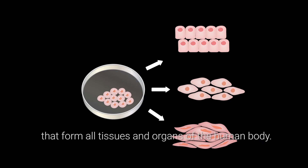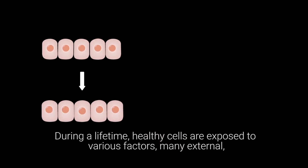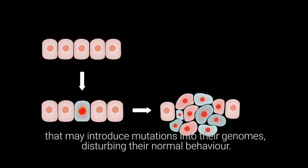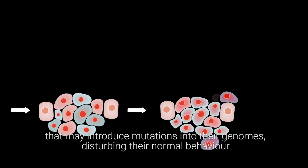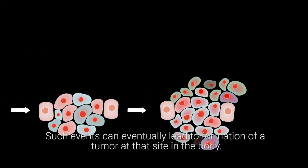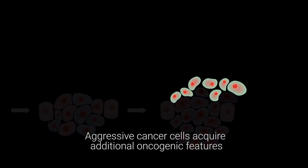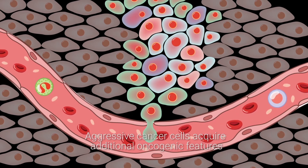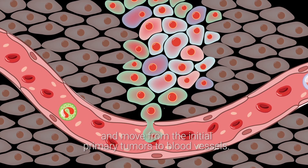During a lifetime, healthy cells are exposed to various factors — many external — that may introduce mutations into their genomes, disturbing their normal behavior. Such events can eventually lead to the formation of a tumor at that site in the body. Aggressive cancer cells then acquire additional oncogenic features and move from the initial primary tumor to blood vessels.